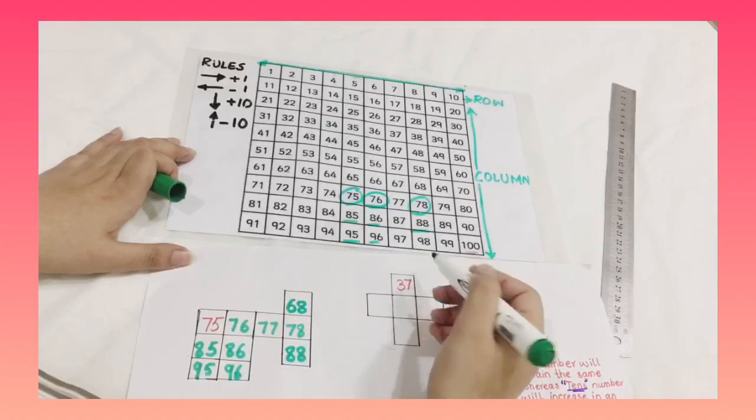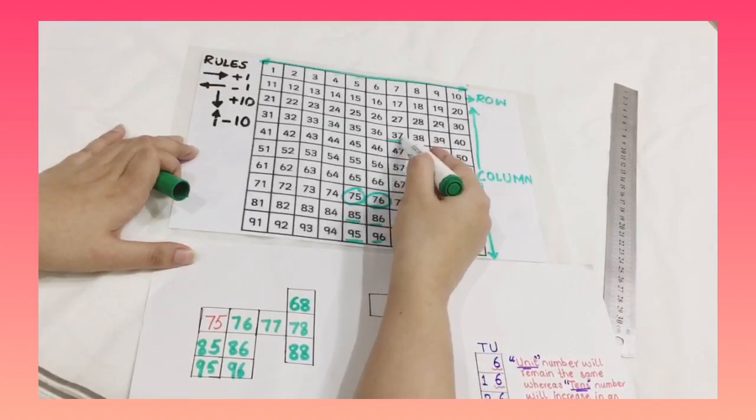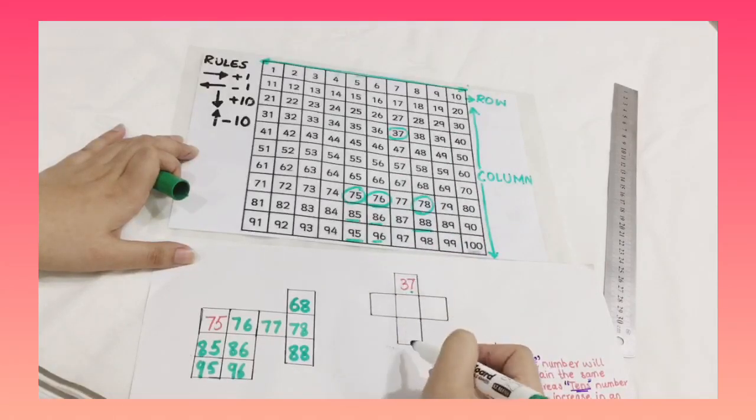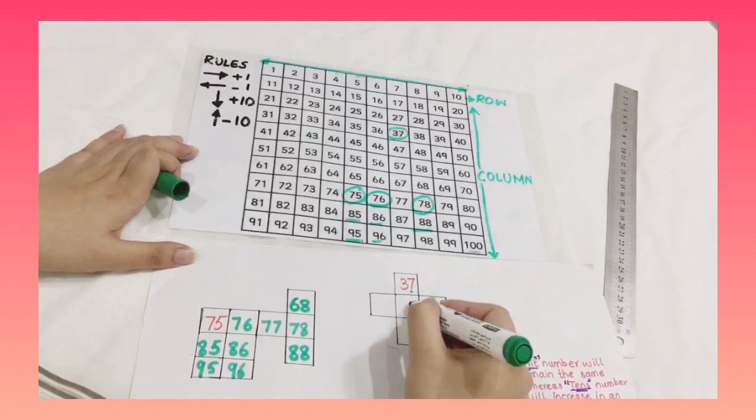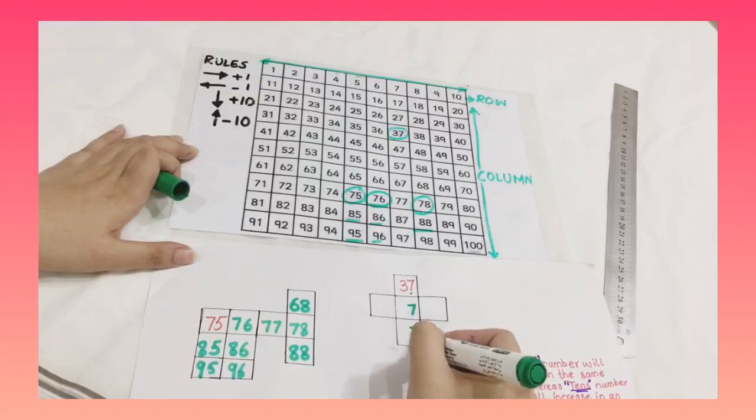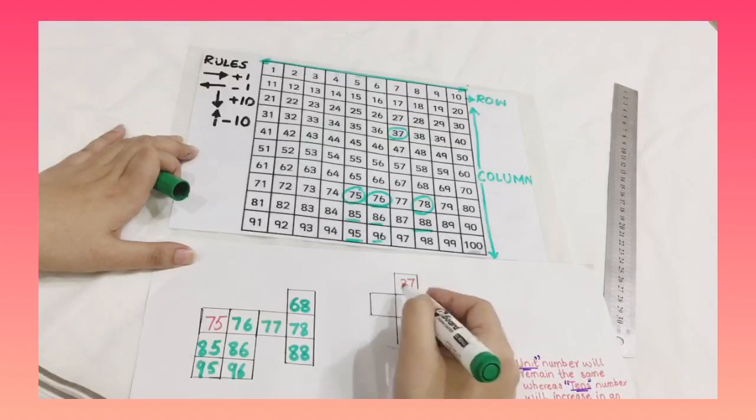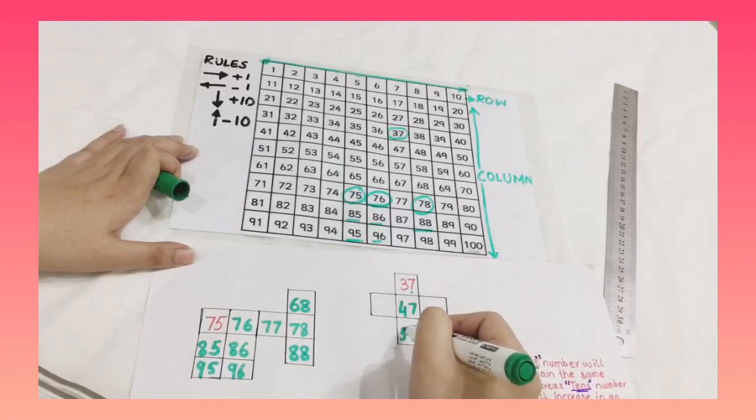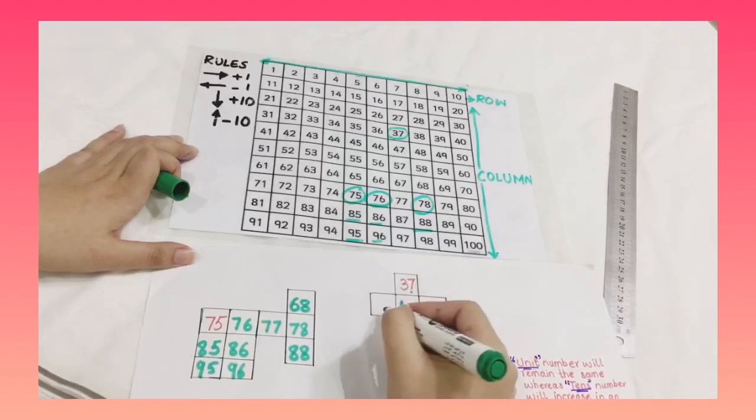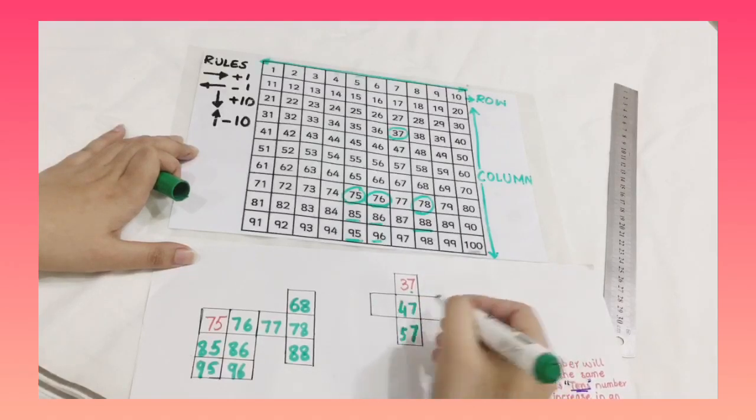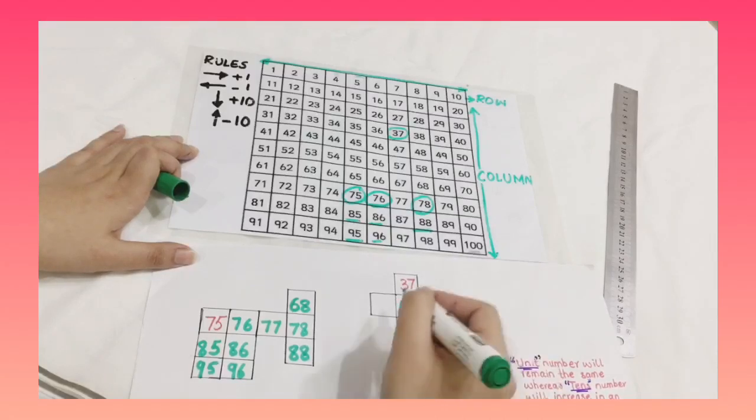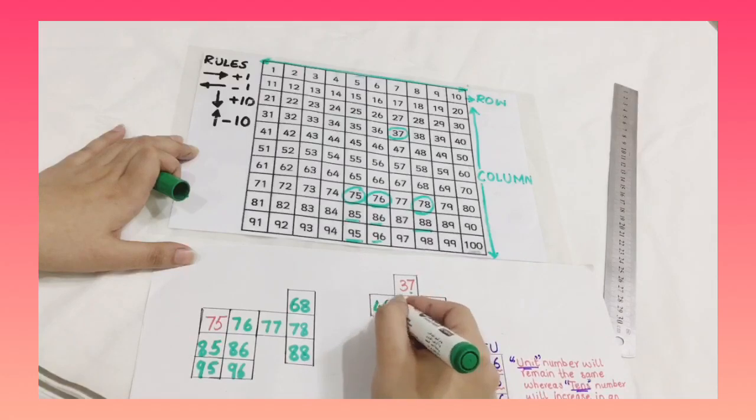Now let's find 37. This is 37 at the top. This number is indicating that this is the seventh column and the unit number will be 7. I wrote it and now as I am moving down the number will increase. This is 4 and this is 5. So 37, 47 and 57. Now this row is easy to solve. The number next to 47 is 48 and the number before 47 is 46.